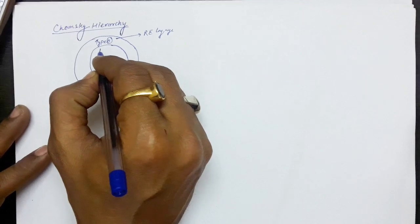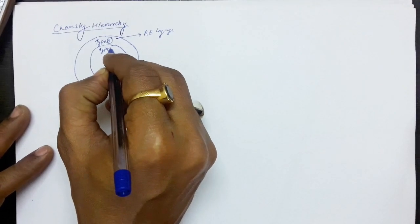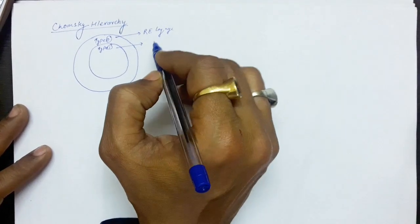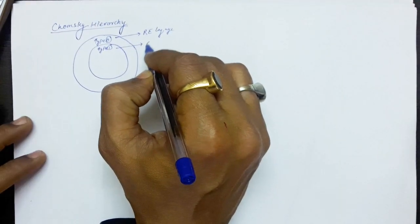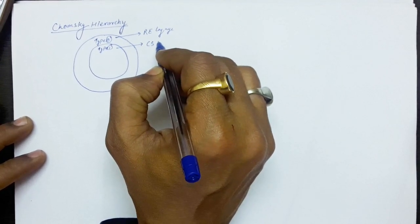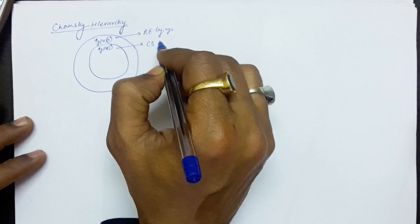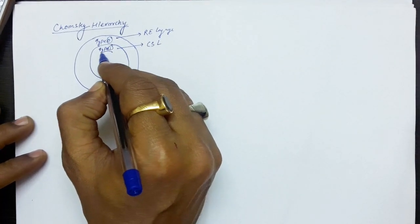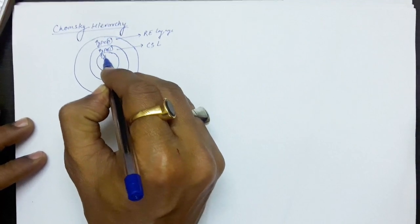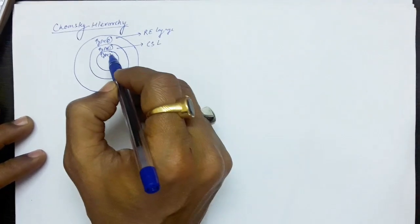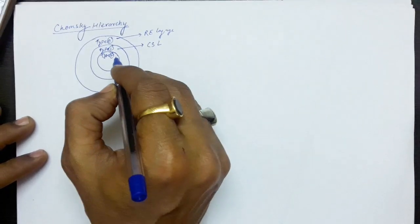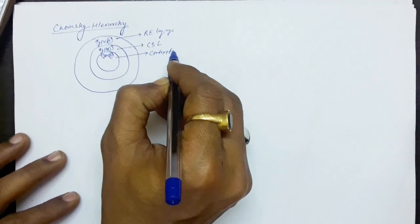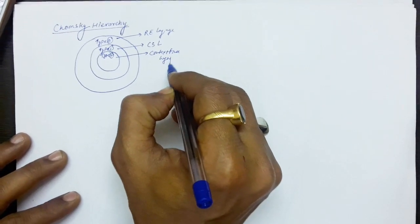A subset of Type 0 will be Type 1, where we have applied some restriction. Type 1 is known as context-sensitive grammar or context-sensitive languages. If we apply more restriction, this becomes the Type 2 language, defined by Type 2 grammar, which is known as context-free. So this is the set of context-free languages.